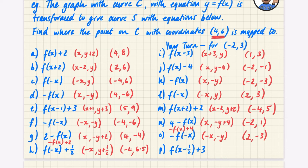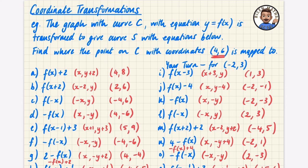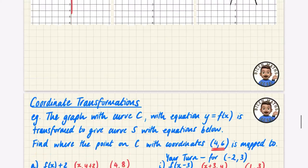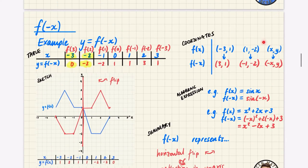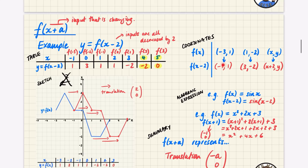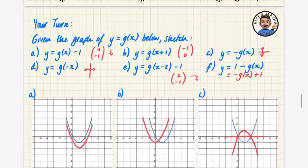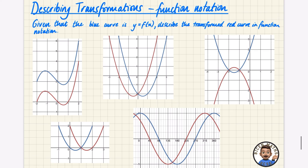For the last one, the x coordinate adds on a half and the y coordinate adds on 3. Remember it's adding a half because it does the opposite. Adding a half to -2 gives -1.5, and adding 3 to 3 gives 6. So the point maps to (-1.5, 6). That's everything with coordinate transformations — you really need to know what these transformations mean. This is the abstract version, but if you're confused it builds on earlier work in this playlist.